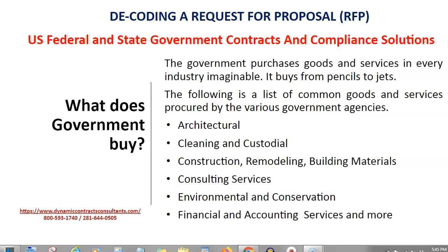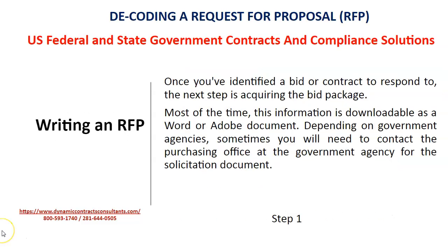The government purchases goods and services in every industry imaginable — from pencils to jets. The following is a list of common goods and services procured by the various government agencies: architectural, cleaning and custodial, construction, remodeling, building materials, consulting services, environmental and conservation, financial and accounting services, and more.